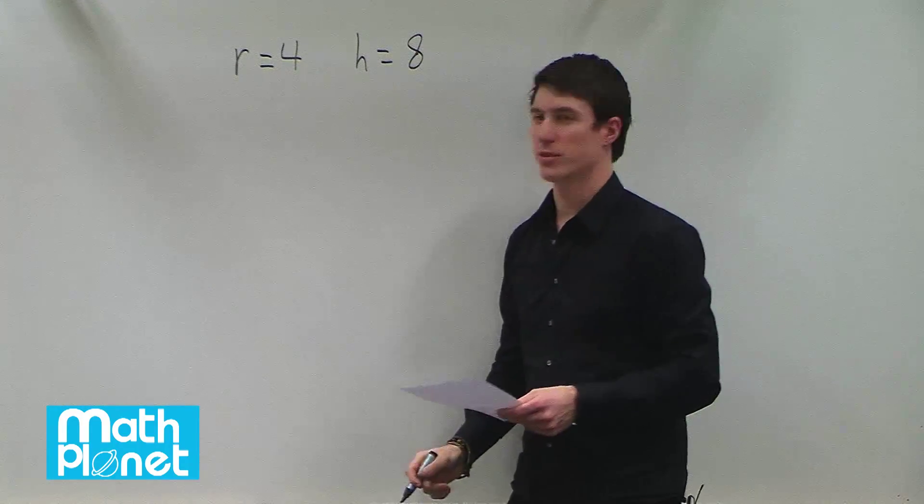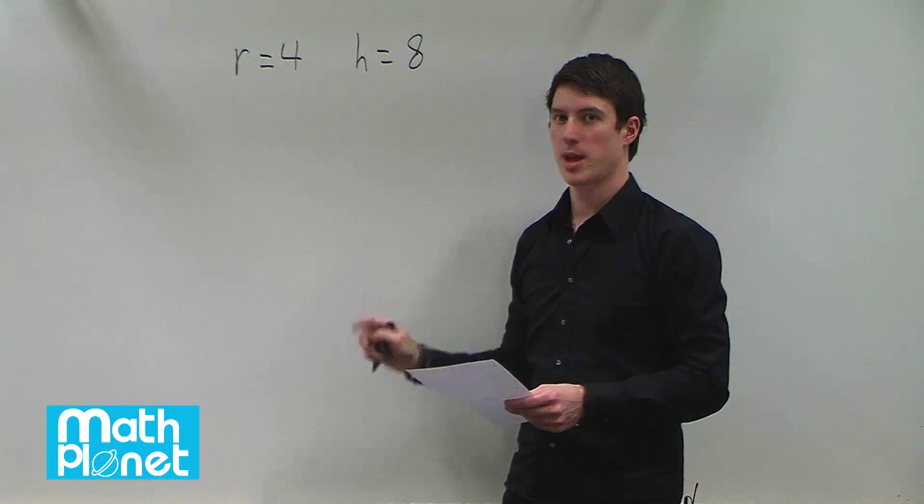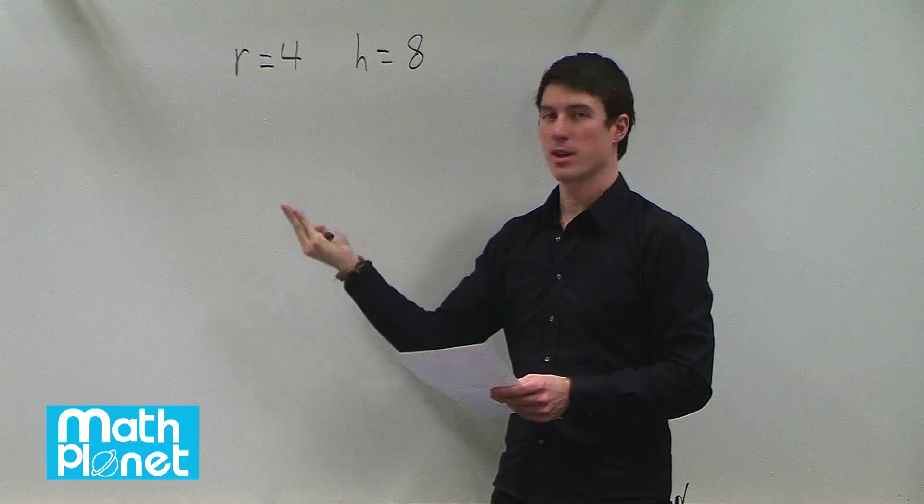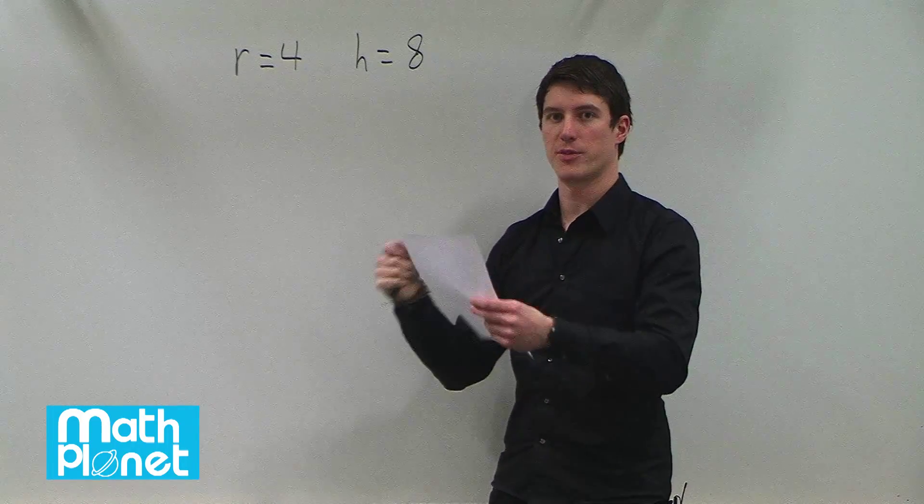To find the surface area of a cylinder we need to find the area of both the top and bottom circles, and the rectangle is the piece that wraps all the way around the cylinder. It's basically a rectangle if you unwrap it.